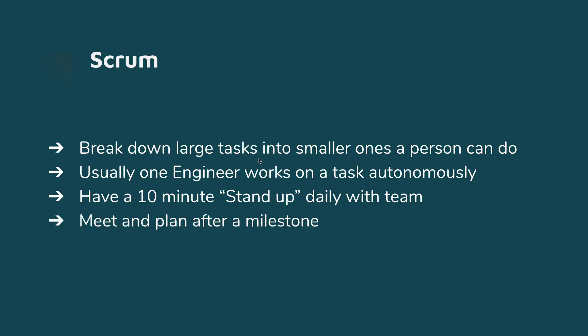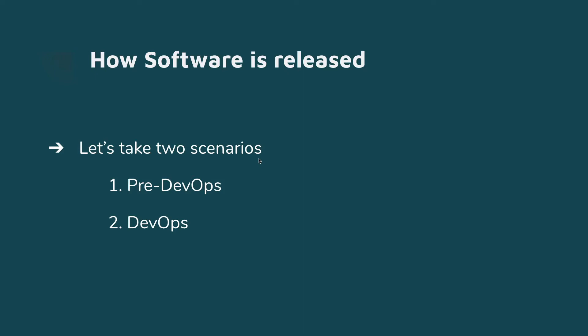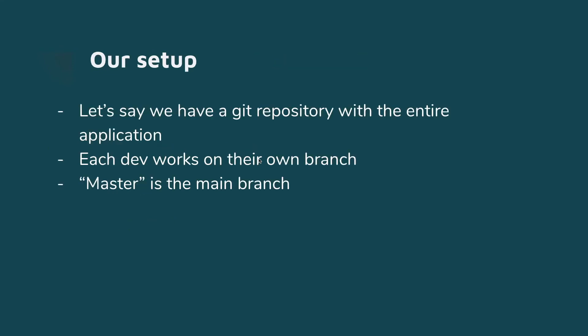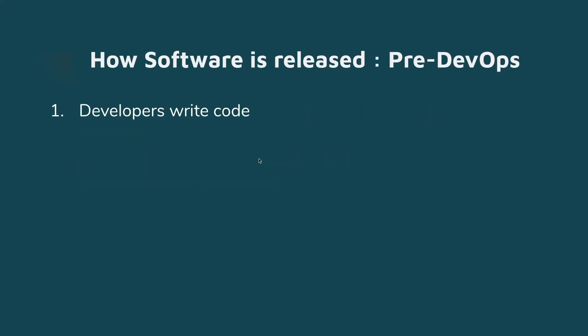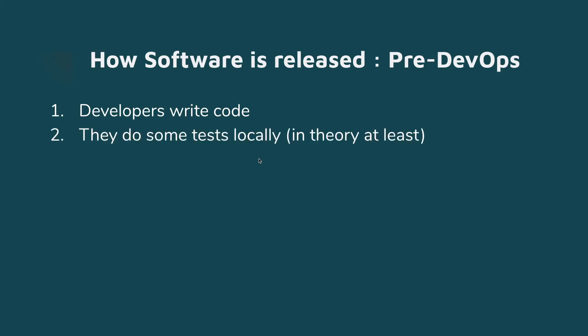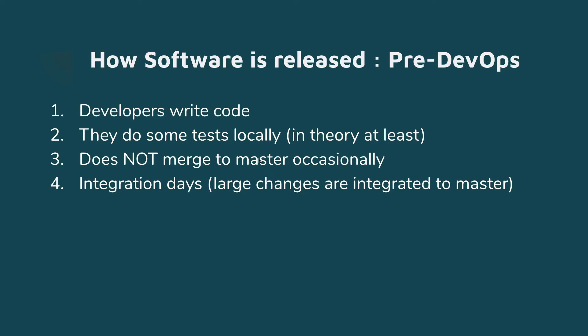Let's look at a more practical scenario. We'll talk about two situations — pre-DevOps and DevOps — just to give an idea of the contrast. Let's say we have a web application in a GitHub repository with a bunch of engineers. Whenever they work on something — a bug fix or a feature — they work on their own branch, and the main branch is the master branch. Once they're done they merge it back. So how is software released? First, developers write their code and do some local tests. This code does not get merged to the master branch right away. There is a specific time and date called integration day, when large changes from different people are integrated into the master branch.